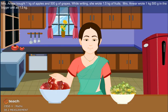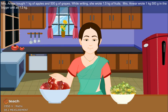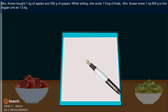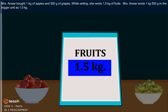Mrs. Anwar bought 1 kg of apples and 500 g of grapes. While writing, she wrote 1.5 kg of fruits. Mrs. Anwar wrote 1 kg 500 g in the bigger unit as 1.5 kg.